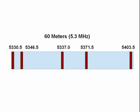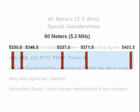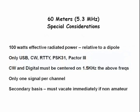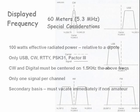We now discuss rules and regulations. The 60 meter band is relatively new to ham radio. It has been channelized, which means that we may only operate on specific frequencies. There are special requirements to operate on 60 meters: the effective radiated power is limited to 100 watts relative to a dipole, there are only a limited number of allowed modes, and only one signal is allowed on any one channel.